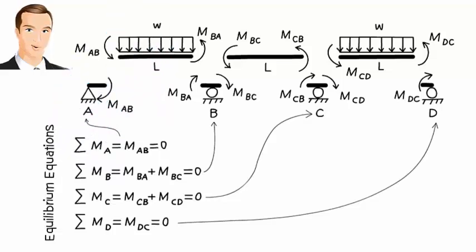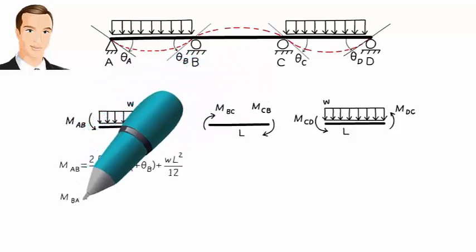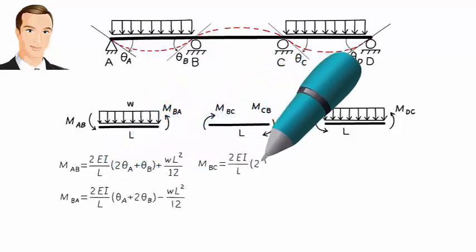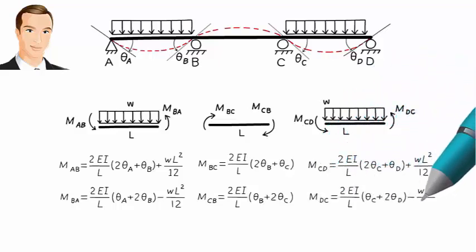But the equations are not expressed in terms of slopes; they are expressed in terms of member end moments. Therefore, we need to rewrite them in terms of theta_A, theta_B, theta_C, and theta_D. We will discuss this in detail in later lectures. For now, let's assume we are given these relations. Note that each member end moment is expressed in terms of joint rotations, the applied load, and member geometry and properties. We call these slope-deflection equations.